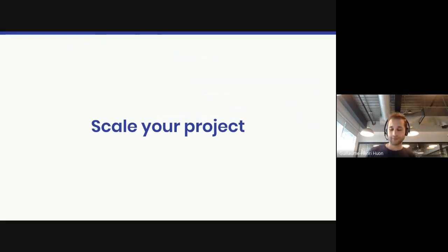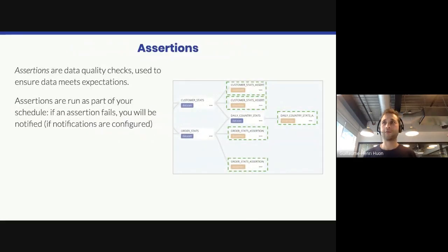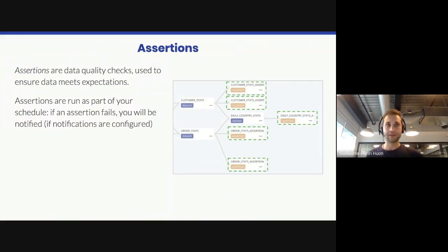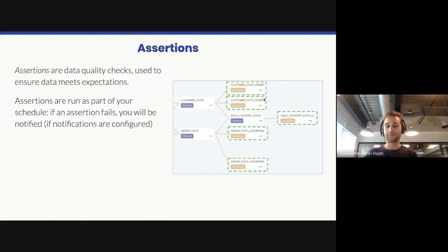Best practices to scale your project. Assertions are data quality checks used to ensure data meets expectations, and they run as part of your schedule. So after creating a table, you can have assertions that run and check if the data you just created is correct — you'd be notified if they fail, provided notifications are configured properly. For example, after creating customer stats, Dataform would run two assertions checking things like null values and uniqueness.